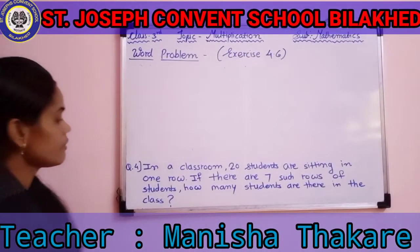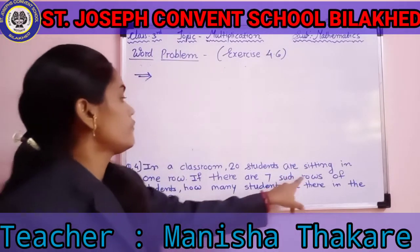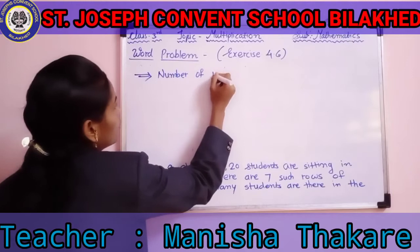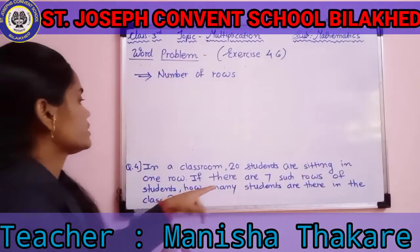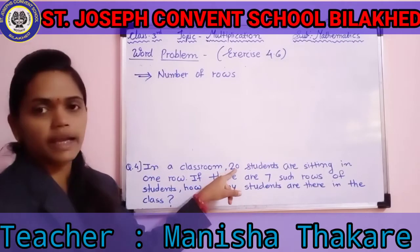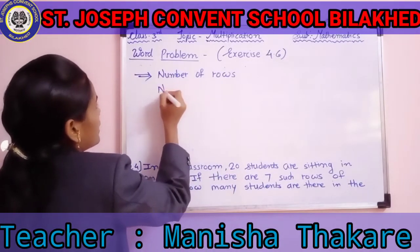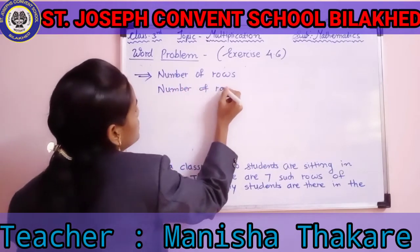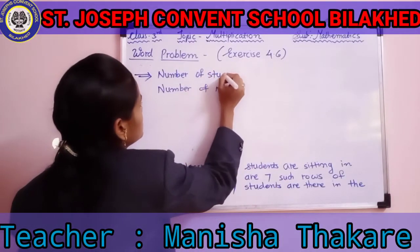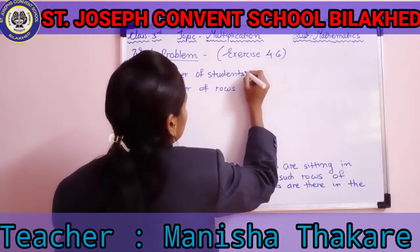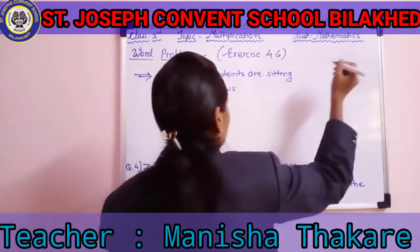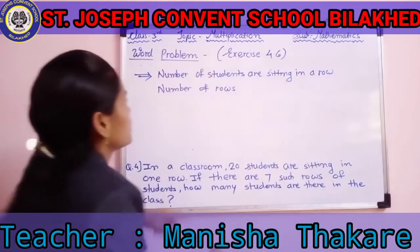The first sentence gives us the number of rows. The next gives us the number of students sitting in one row. We take the bigger number on top. So upside we write the number of students sitting in one row, and downside we write the number of rows.